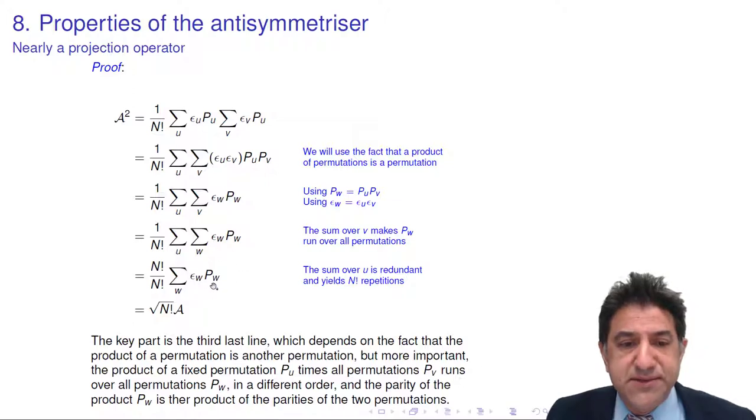leaving only the last term. The two n factorials cancel and we are left with just this summation. And the only difference between that summation and the antisymmetrizer is the factor of the square root of n factorial. So that's where this factor comes in.